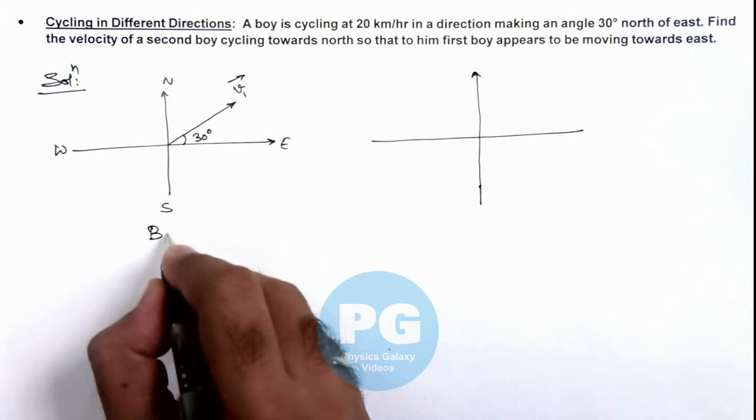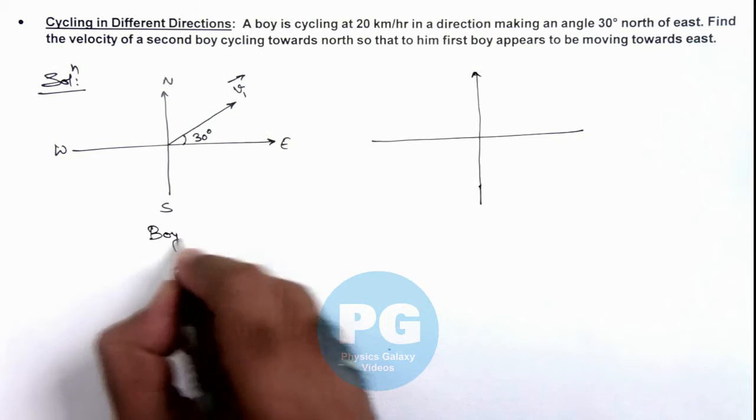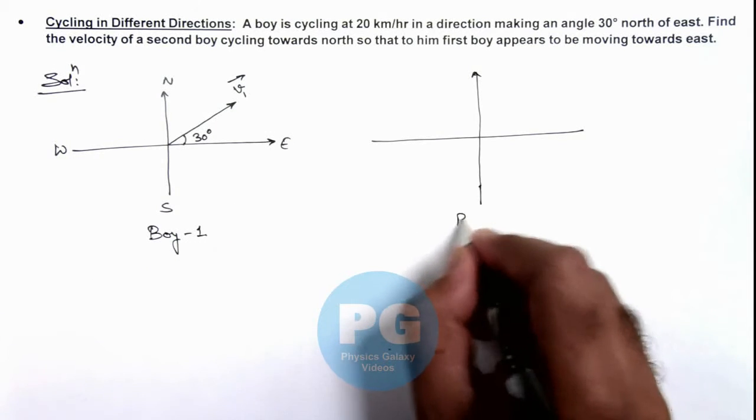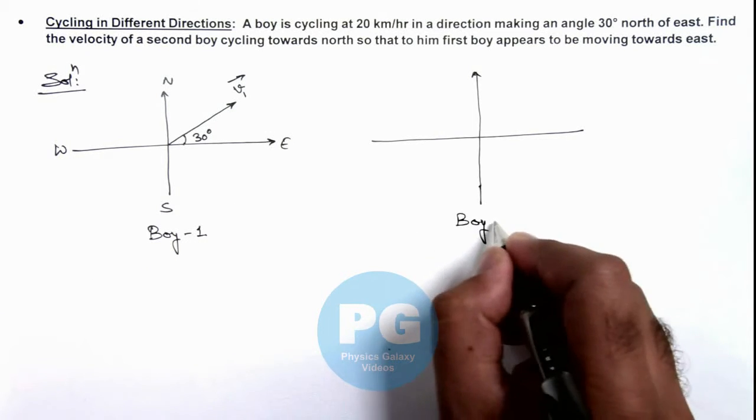Say if this is the diagram of boy velocity 1, or this boy 1, and here I am drawing the diagram for boy 2.